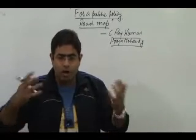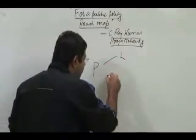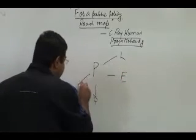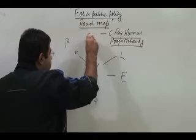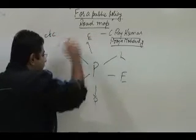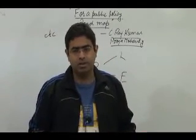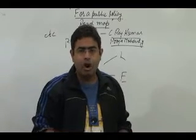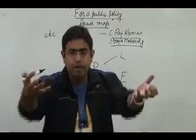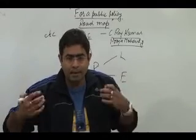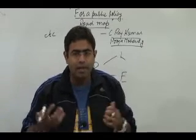How can we design a holistic and encompassing public policy? Public policy involves the legislature, the executive, people, NGOs, research, experts, and a lot of permutations and combinations. Key questions include: What needs to be done? How does it need to be done? For how long will this policy action yield results? And for how long will we be able to sustain these policies? These questions must be answered before a policy document is finalized.